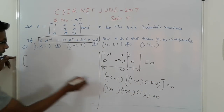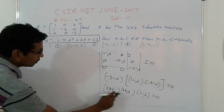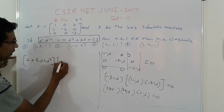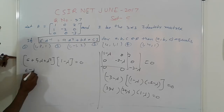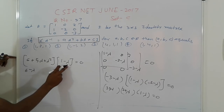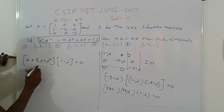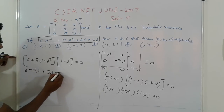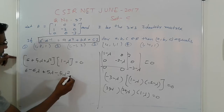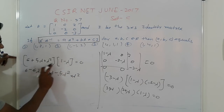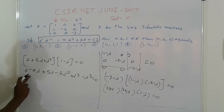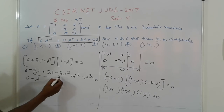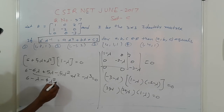Multiply it again: 3 times 2 is 6, plus 5λ plus λ², and here (1−λ). Simplifying: 6 minus 6λ plus 5λ minus 5λ² plus λ² minus λ³. Simplification gives 6 − λ³ minus 4λ² minus λ³ equal to 0.